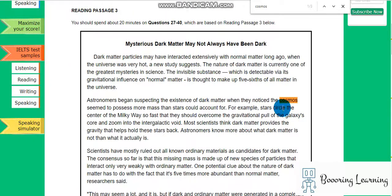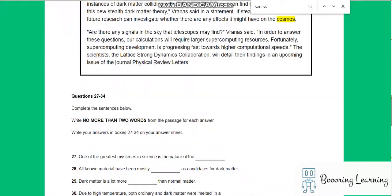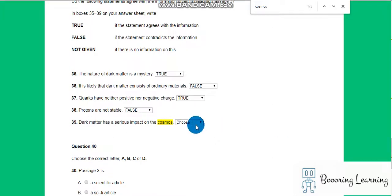So there are three cosmos. They notice the cosmos seem to possess more. Okay, there's no such thing but we can say false as well. So it is not given.